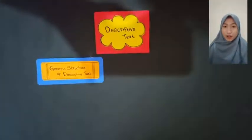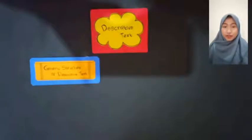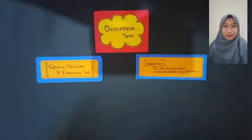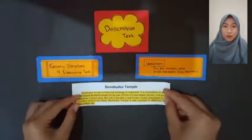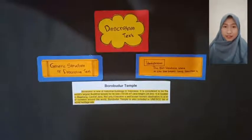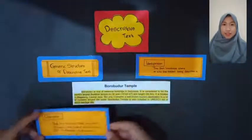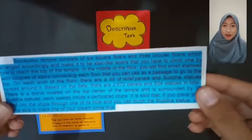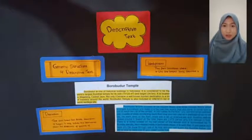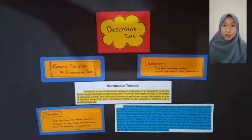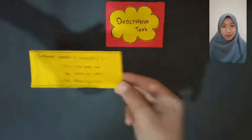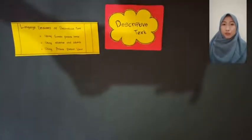Generic structure of descriptive text. The first is identification. Identification is the part that introduces where or who the subject being described is. Bagian ini menjelaskan tentang di mana atau siapa yang dideskripsikan. The last is description. Description is the part that gives the detailed description of the subject. It may include information about the appearance or quality of the subject. Bagian ini menjelaskan deskripsi detail subjek, termasuk informasi tentang penampilan atau kualitasnya.